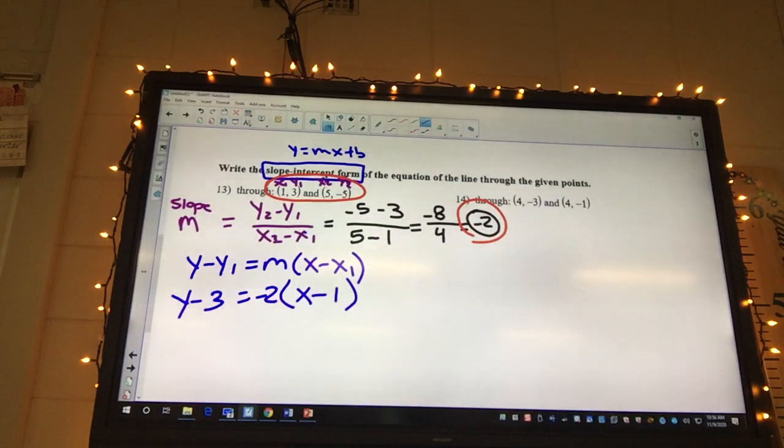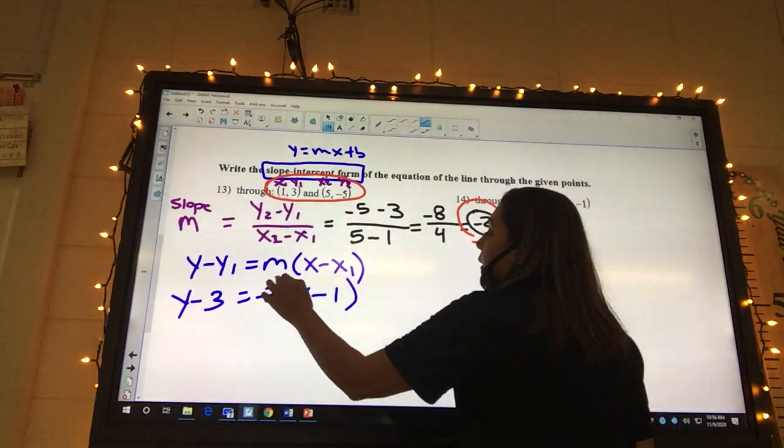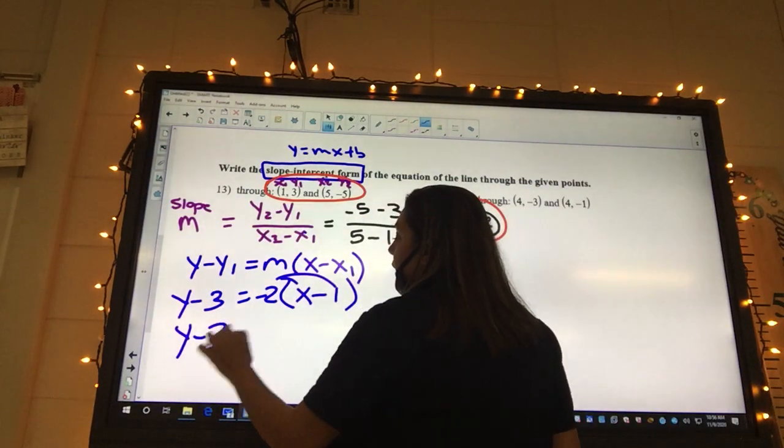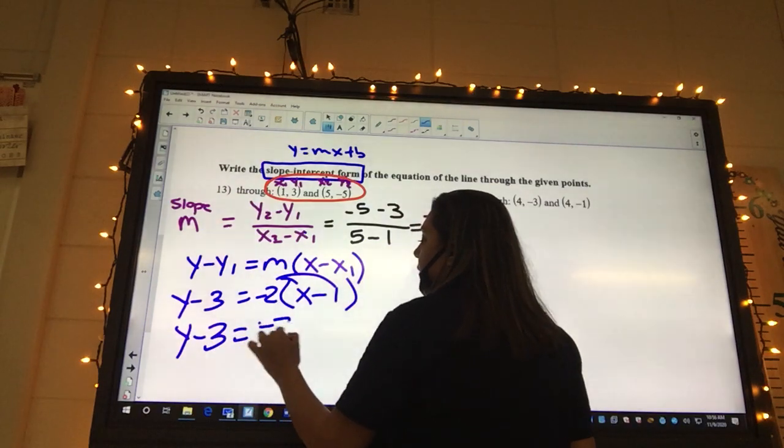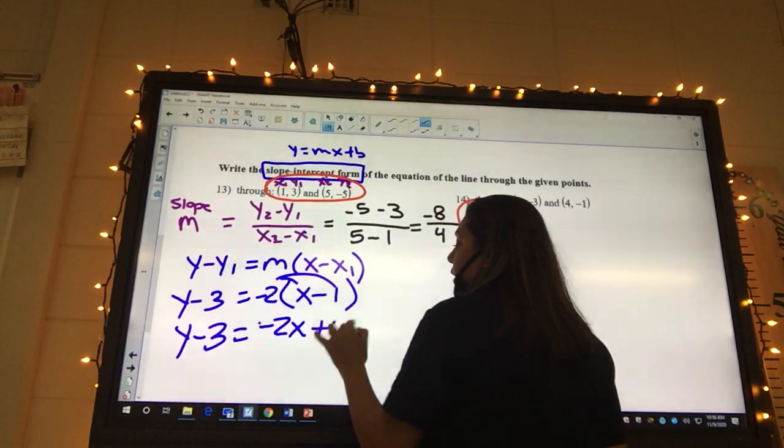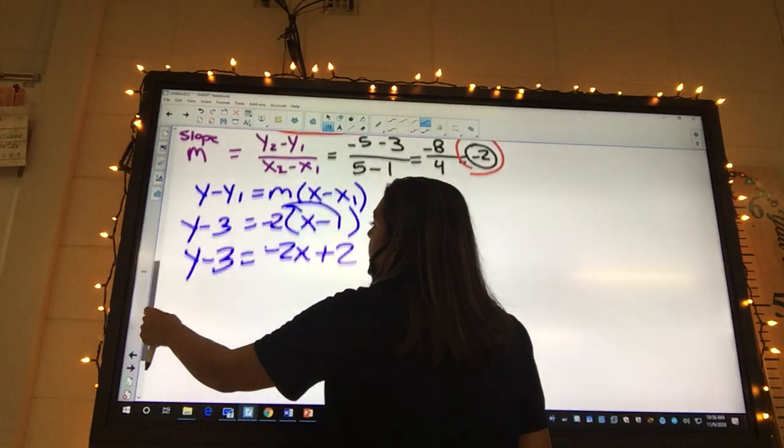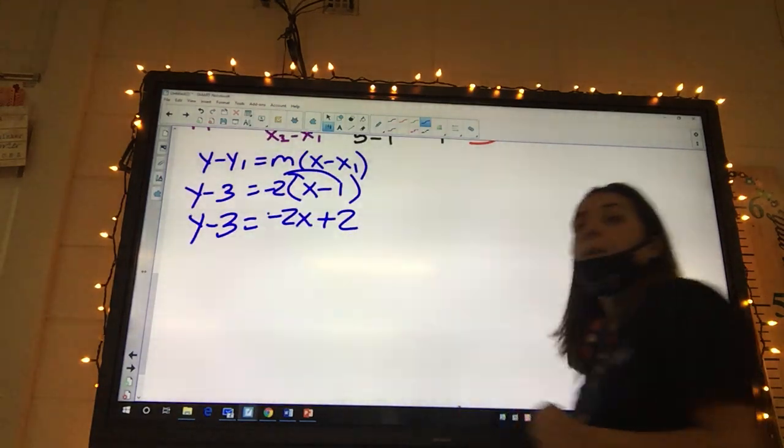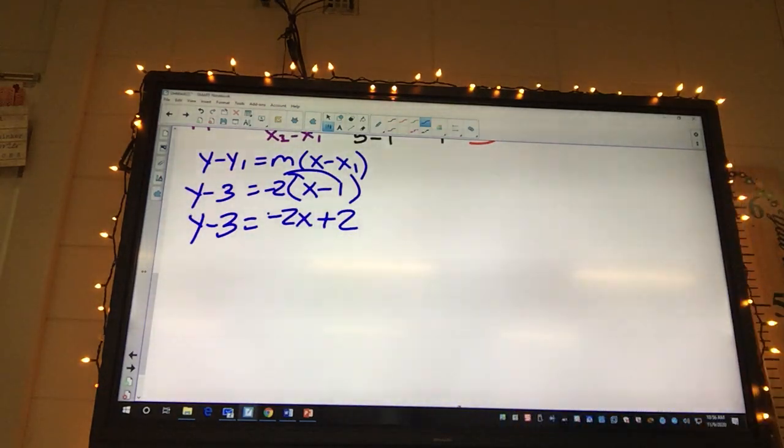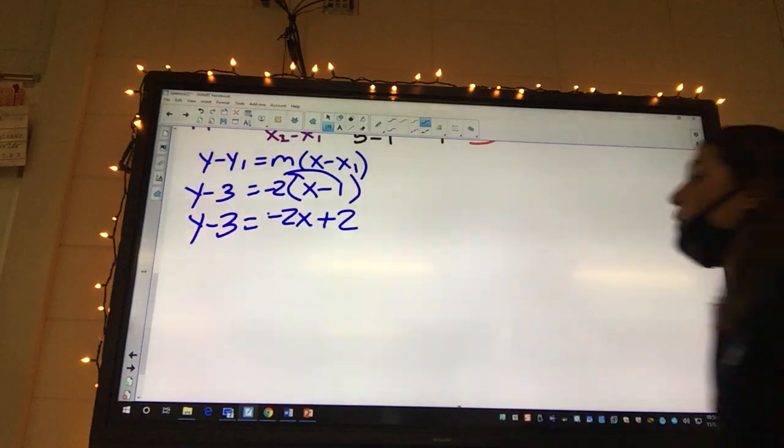So now we got a point slope, but what formula are we trying to get to? Slope intercept. So what do I need to do? We got to distribute. So we got y minus 3 equals negative 2 times x minus 1, which gives us negative 2x plus 2. I'm going to scroll this down a little bit so you guys can see.